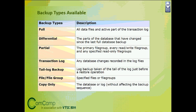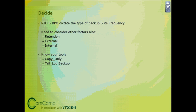Once you know what recovery models and backup types are available in SQL Server, you are equipped to configure a SQL Server backup strategy for your database. But these are not the only things to consider. Your RTO and RPO — Recovery Time Objective and Recovery Point Objective — are what actually dictate the type of backup you should take and its frequency for a given database.